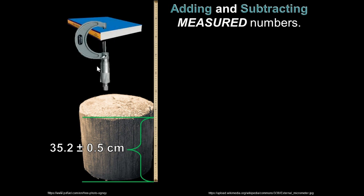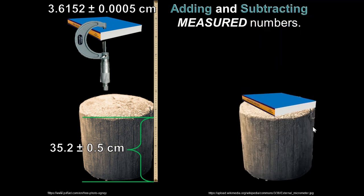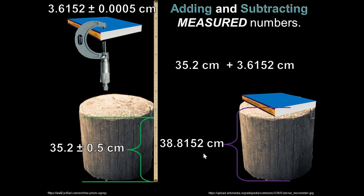and then we use a micrometer to measure the thickness of a book at 3.6152 ± 0.0005 centimeters, and we stack that book on top of the tree stump — how tall is it altogether? We just add those two measurements. But if we write that sum directly, we have the potential of being dishonest, maybe unintentionally. We're going to learn how to round our answer to the correct place.